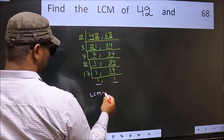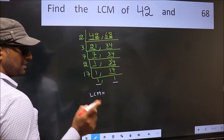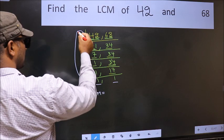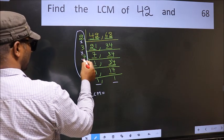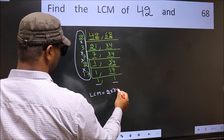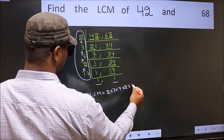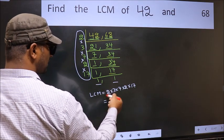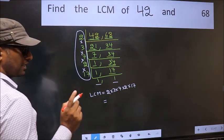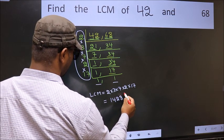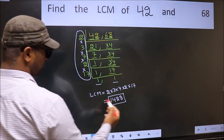So our LCM is the product of these numbers, that is 2 times 3 times 7 times 2 times 17. When we multiply these numbers, we get 1428, which is our LCM.